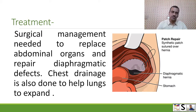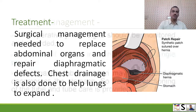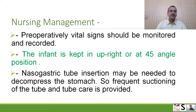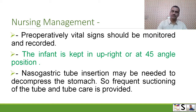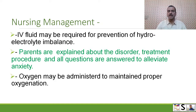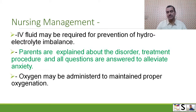After surgery, chest drainage is also done to help the lungs expand and return to normal size. What nursing management is needed? Preoperatively, vital signs should be monitored and recorded. The infant is kept in an upright position or at a 45-degree angle. Nasogastric tube insertion may be needed to decompress the stomach, with frequent or continuous suctioning and nasogastric tube care. IV fluids may be given to prevent fluid and electrolyte imbalance. Parents are explained about the disorder and treatment, and all questions are answered to alleviate their anxiety. Oxygen administration may be given as per doctor's order.